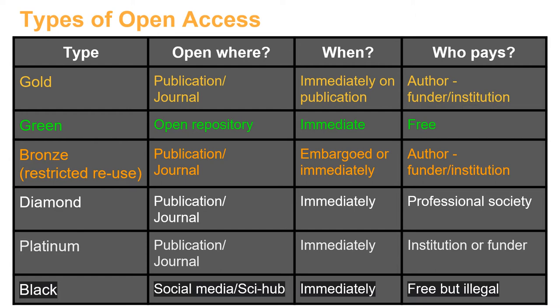I also want to highlight black open access. Many researchers upload final published versions of articles to academic social media sites such as ResearchGate or Academia, but this can be in breach of copyright. You also need to be careful when using sites like Sci-Hub to access research articles, as this is also an illegal act.